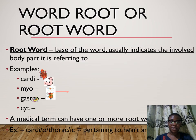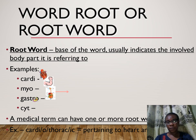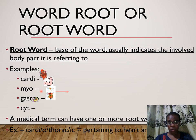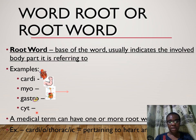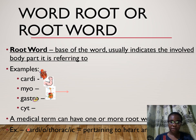Root words are the base word — the organ or body part of interest when that term was coined. For example, 'cardi' talks about the heart, 'myo' talks about the muscles, 'gastric' talks about the stomach, and 'cyte' talks about the blood cell. A medical term can have one or more root words. For example, 'cardiothoracic' pertains to the heart and the chest — 'cardi' means heart, 'thoracic' means chest, and the 'o' in the middle is a combining vowel.